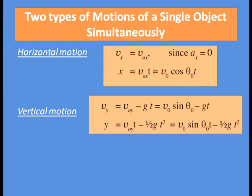Projectile motion contains two simultaneous motions: a vertical component and a horizontal component. The horizontal velocity Vx equals Vox, which is constant because the acceleration along the x-axis is zero. The distance covered in the horizontal direction is x = Vox · t = V0 cos θ₀ · t.